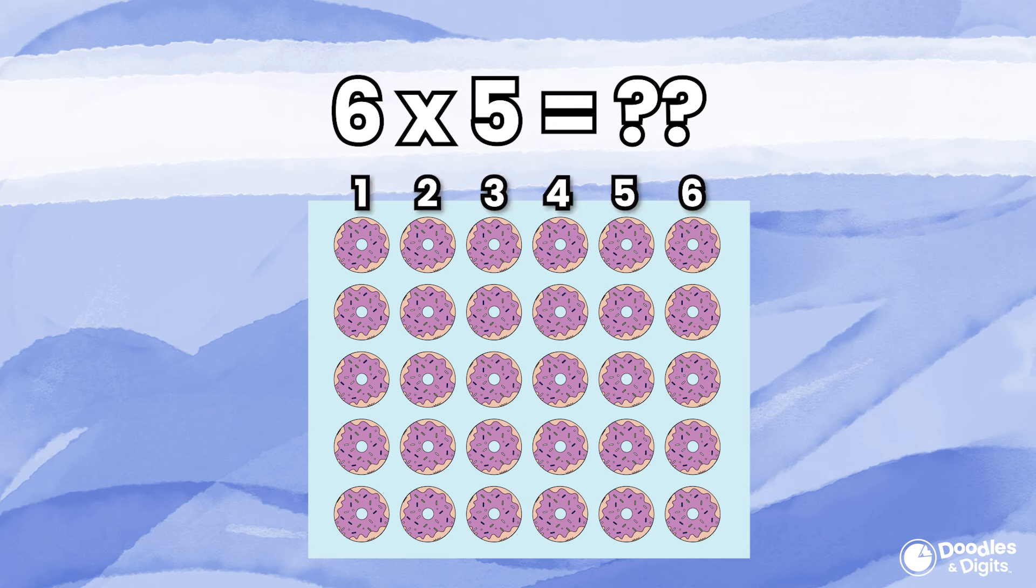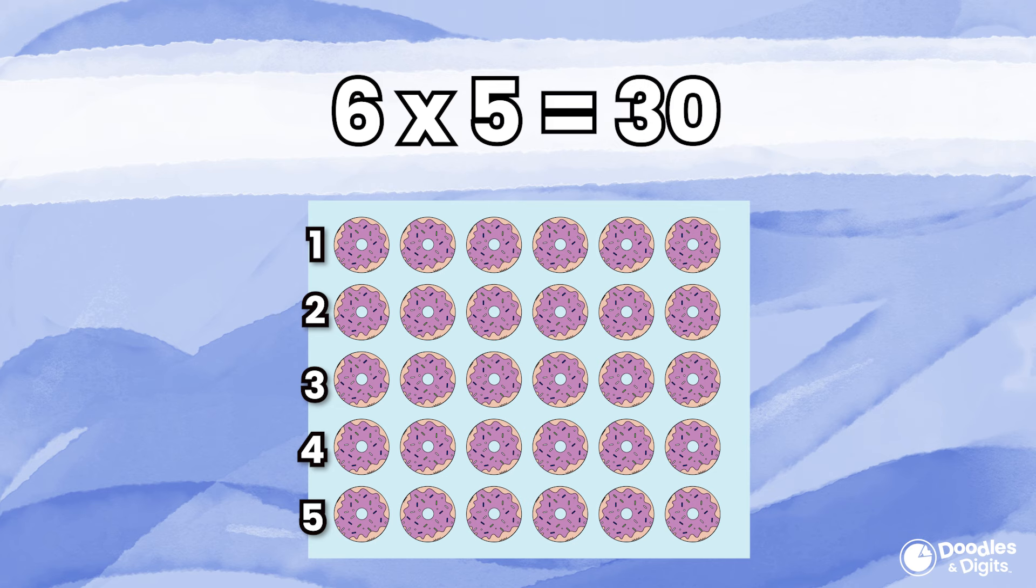Alright, I drew 6 columns and 5 rows of donuts. 6 times 5 equals 30.